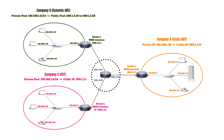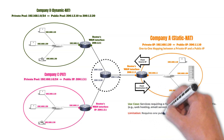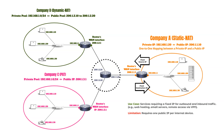Static NAT establishes a one-to-one mapping between one private IP address and one public IP address. It is ideal for services that require a fixed IP for outbound or inbound traffic, such as web hosting, email servers, or remote access via VPN. However, since each internal device in static NAT requires its own public IP, it becomes inefficient in environments where multiple devices need external access but only a limited number of public IPs are available.